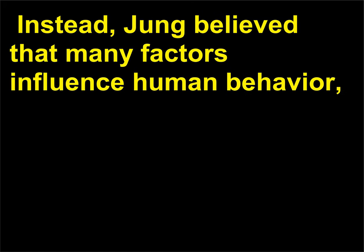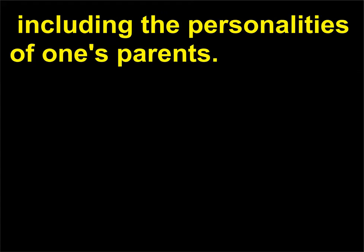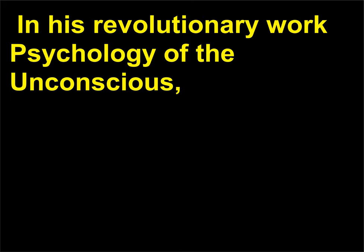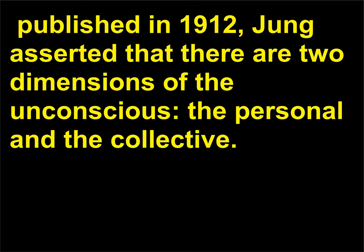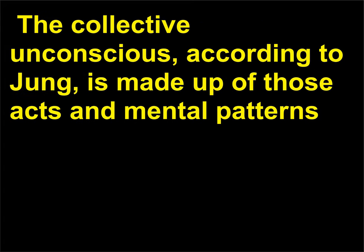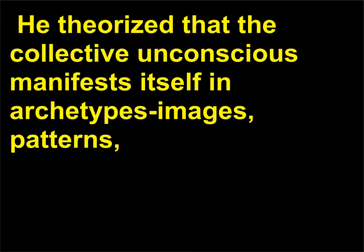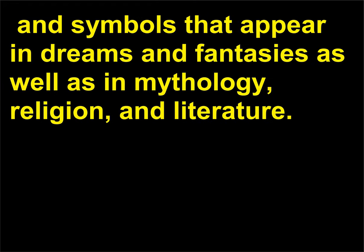Instead, Jung believed that many factors influence human behavior, including the personalities of one's parents. He also believed in something he described as the collective unconscious. In his revolutionary work Psychology of the Unconscious, published in 1912, Jung asserted that there are two dimensions of the unconscious: the personal and the collective. The collective unconscious, according to Jung, is made up of those acts and mental patterns that are shared by members of a culture or are perhaps universally shared by all humankind. He theorized that the collective unconscious manifests itself in archetypes — images, patterns, and symbols — that appear in dreams and fantasies as well as in mythology, religion, and literature.